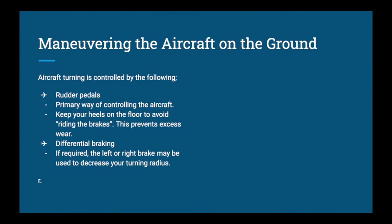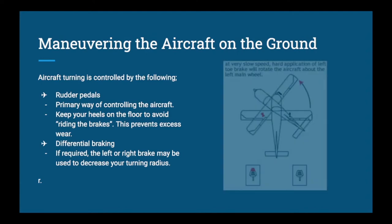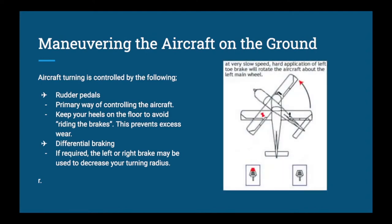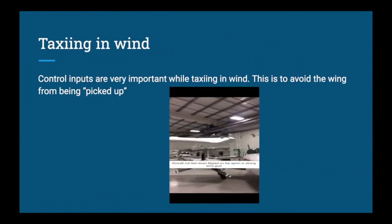The primary way to turn the aircraft is to use the rudder pedals — keep heels on the floor. Press left rudder and the airplane turns left; press right rudder and it turns right. If you need a tight turn into or out of a parking spot, you can use differential braking: apply left rudder and hold the left brake, and the aircraft will pivot around that tire for a tight turn. It does cause some tire wear and requires a higher power setting, so we try to avoid differential braking when possible, but sometimes it's required.